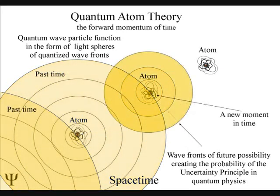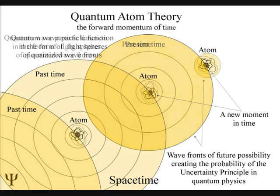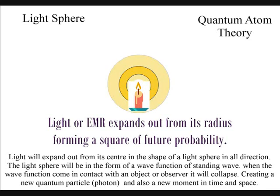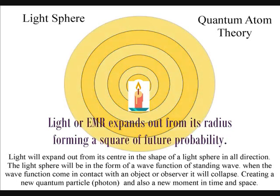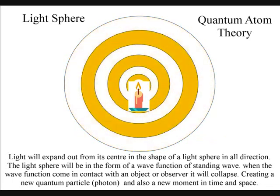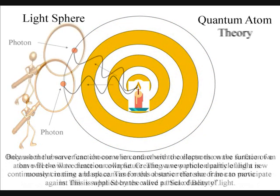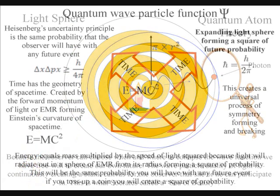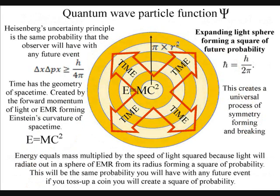Light radiates out from its radius in all directions, forming light spheres of electromagnetic radiation. Only if the light waves come in contact with an object will they form new photons of energy that have a unique position in space and time. This is a continuous process forming the arrow of time and the geometry of space-time.